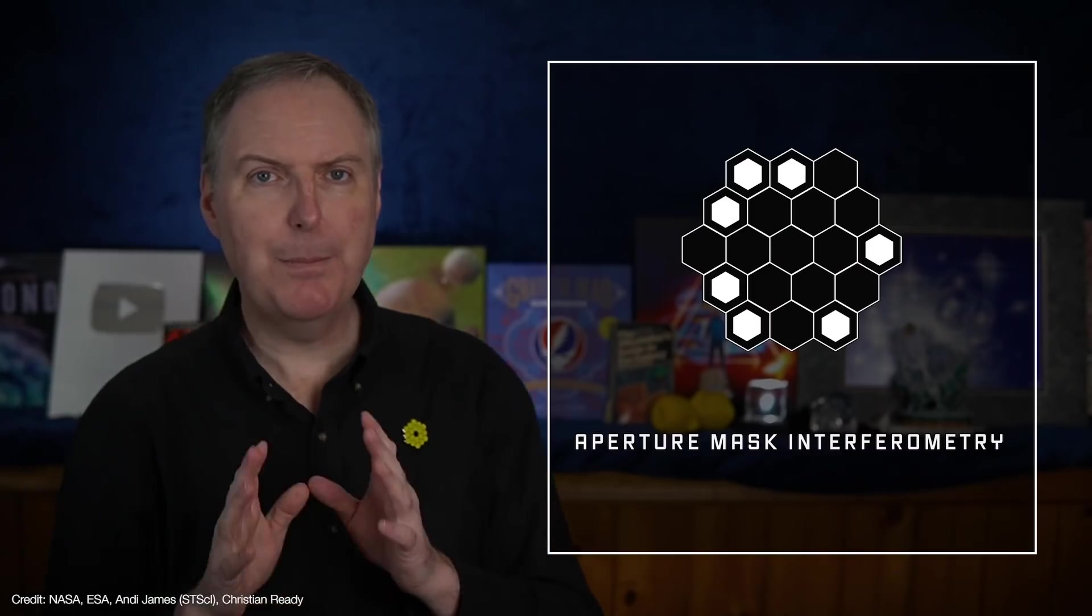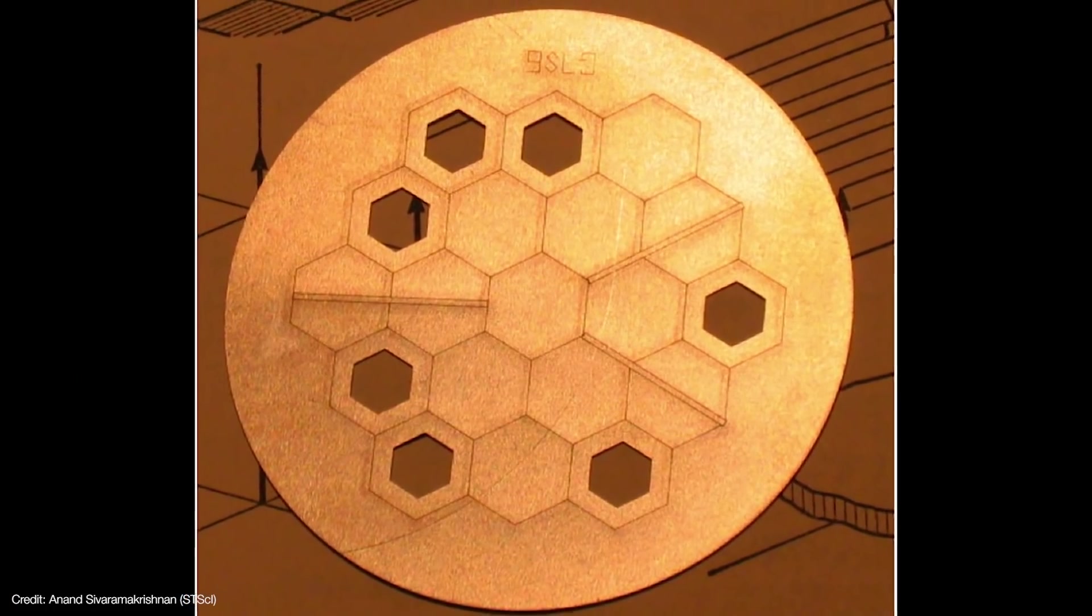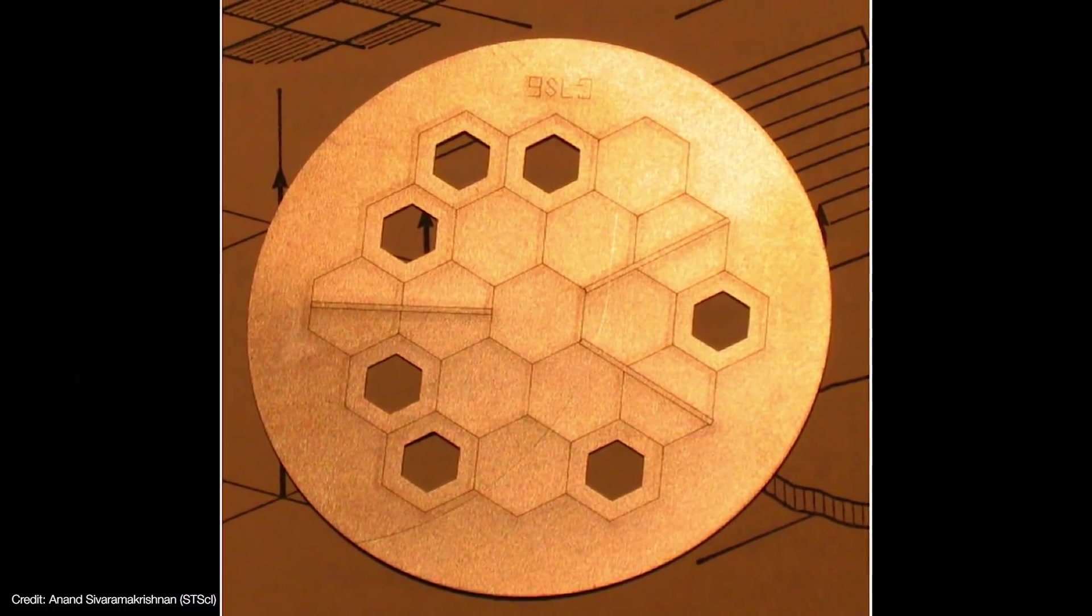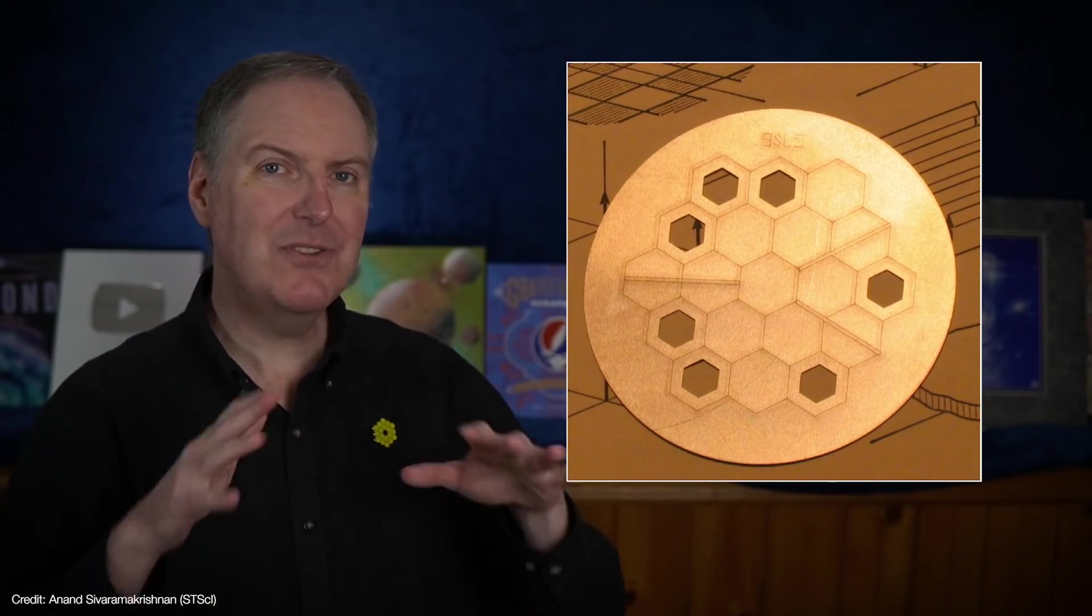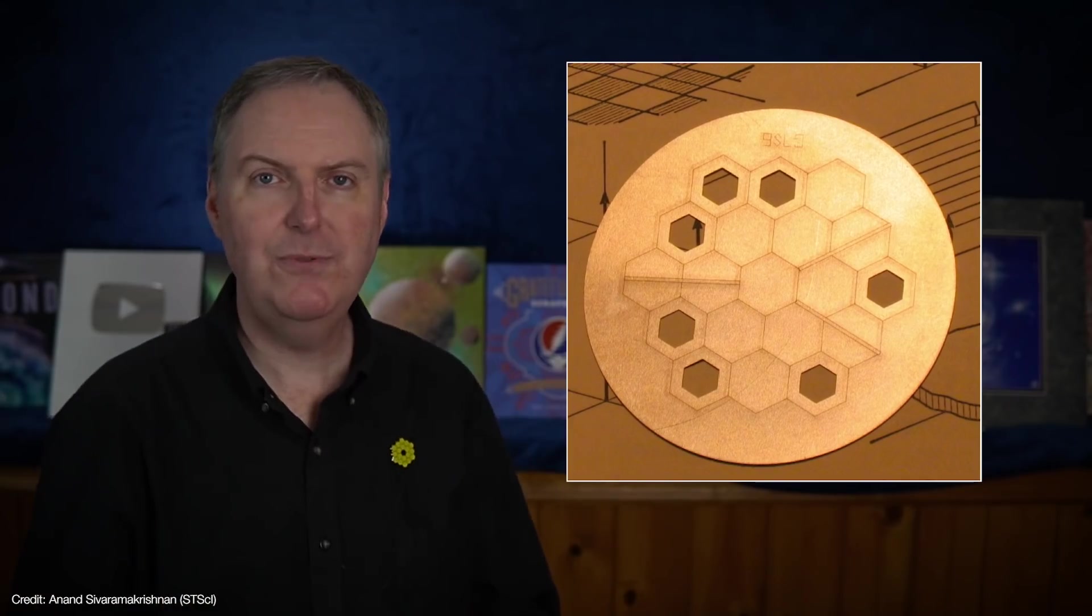NIRISS also has an aperture masking interferometry mode, or AMI. This mode uses a mask that only allows light from just seven of Webb's mirror segments through. This causes the light waves to interfere with each other and reveal details that would otherwise be too faint to detect.